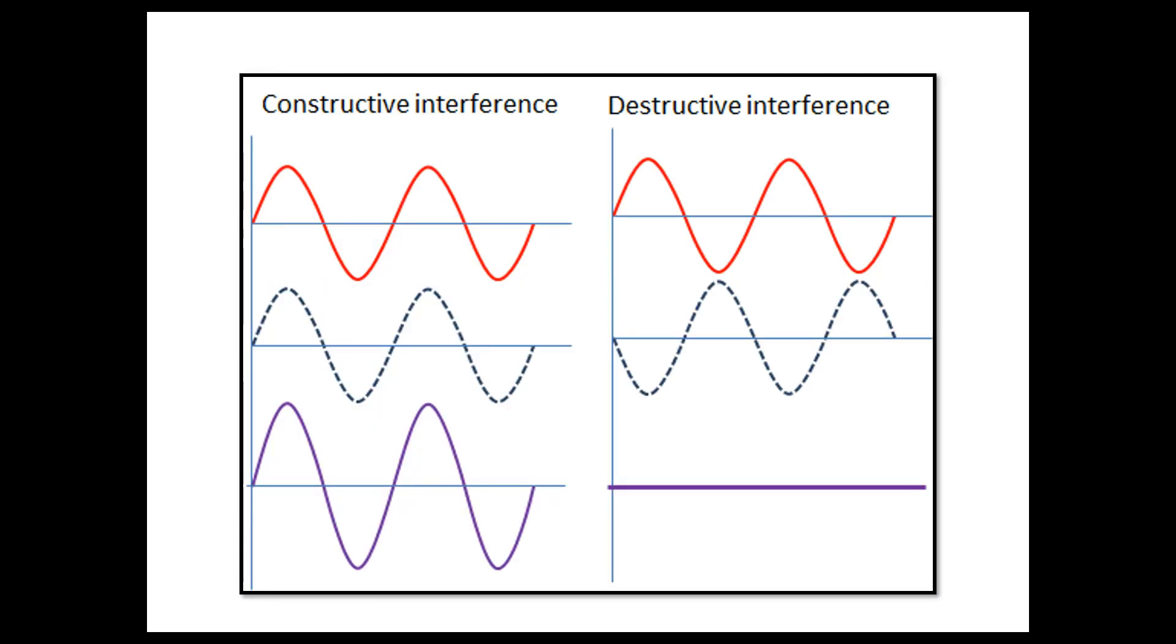So if we need a visual representation of what this looks like, on the left, you can see you have two waves that meet. The crest of one lines up perfectly with the crest of another and so you get a larger wave. Destructive interference is when the crest of one wave might meet the trough of another. If they cancel out, then the wave destructs.